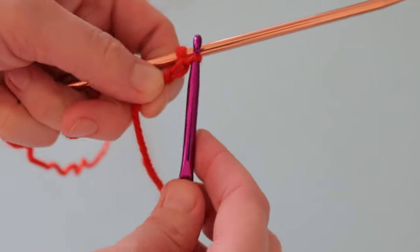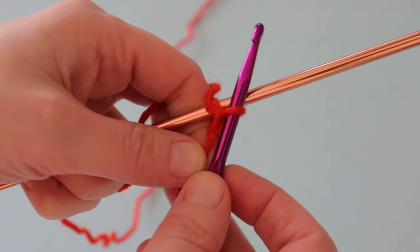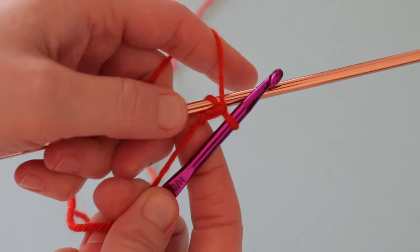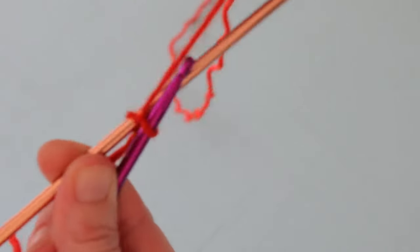We're going to yarn over our crochet hook and draw a loop through the initial slipknot. I'm pausing here so that you can see how this should look. The initial slipknot has the loop drawn through it and a loop of yarn has been attached to our knitting needle.